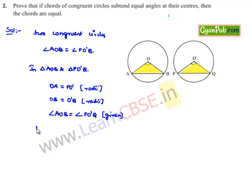Now, by the SAS property of congruency, we can say that triangle AOB is congruent to triangle PO'Q.